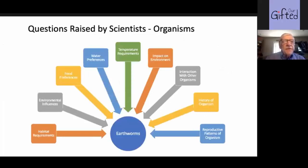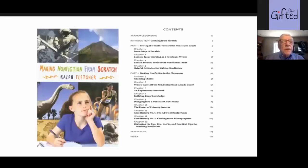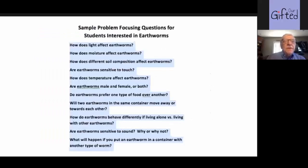Here's one from science — a how-to book on earthworms with questions raised by students about organisms. We see many different kinds of questions kids can investigate if they're interested in scientific research. Here's one: Making Nonfiction from Scratch, and that's the table of contents of the book, teaching kids just how it's written by people with a lot of experience in nonfiction. Sample problems for students interested in earthworms: how does light affect earthworms? How does moisture affect earthworms? Are earthworms sensitive to touch? These were all things kids learned through investigative techniques.